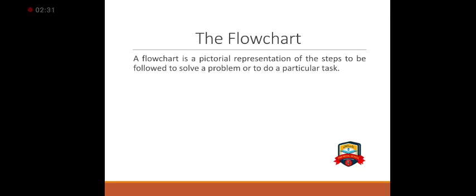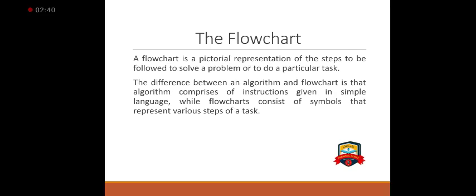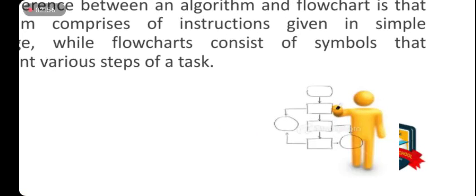The flowchart is pictorial representation of the steps to be followed to solve a problem or to do a particular task. The difference between an algorithm and flowchart is that algorithm comprises of instructions given in simple language, English language, while flowchart consists of symbols that represent various types of steps of task. You can see the example of flowchart here.